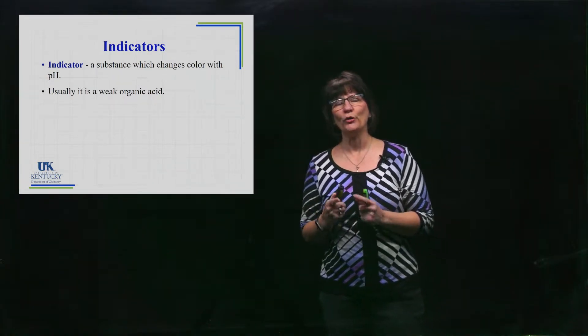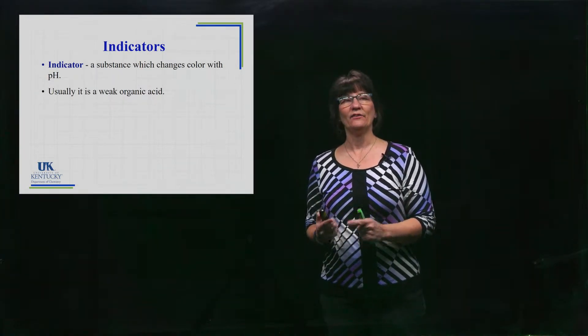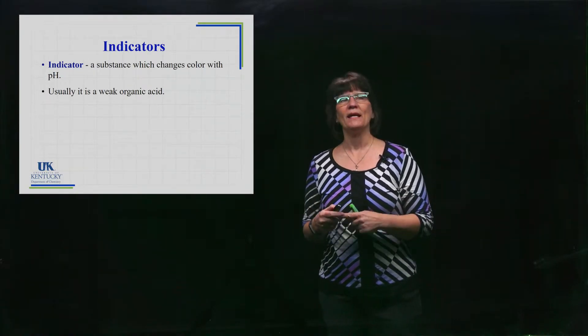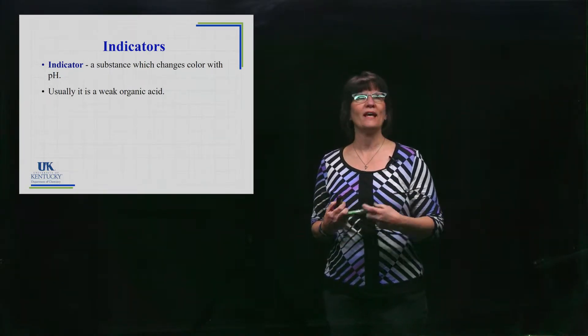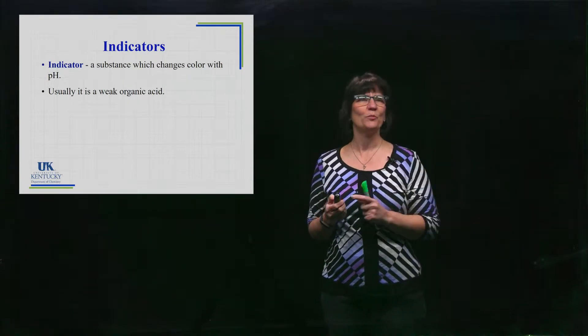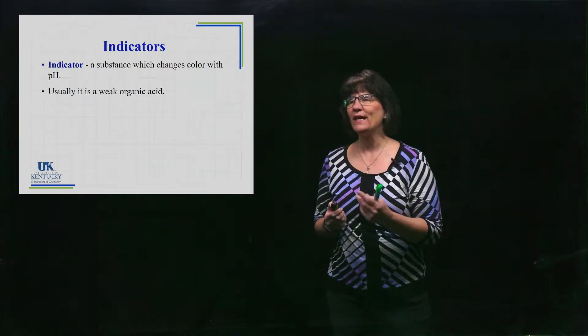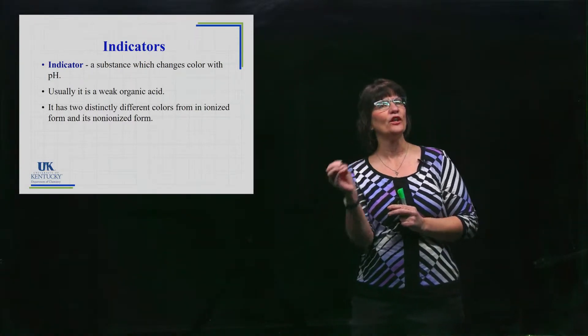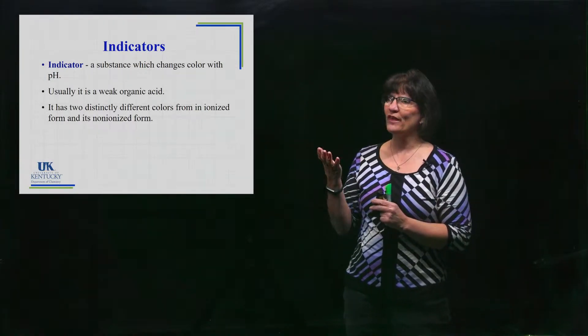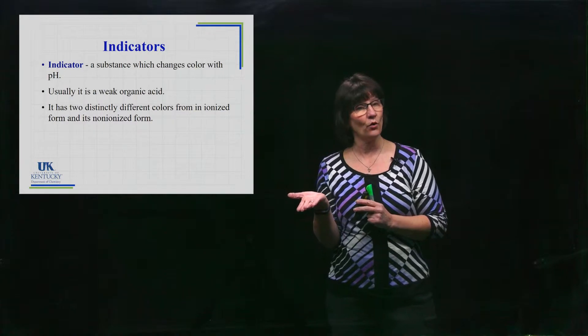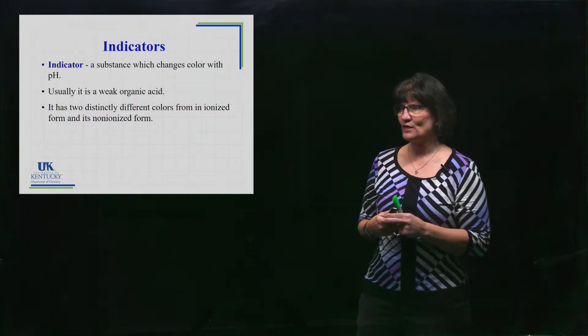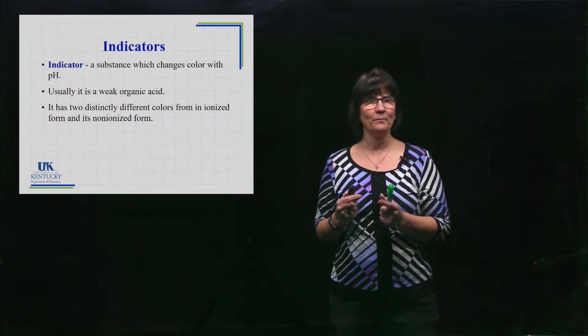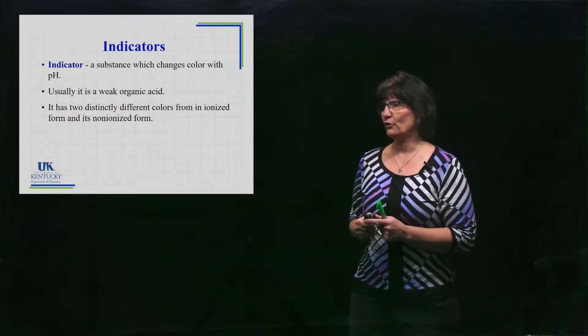So how does it work? Well usually it is itself a weak organic acid, meaning it has those carbons. It probably has a COOH group in there somewhere. They are weak acids, and these weak acids are very specific in that they're different colors depending on whether the H is attached in its acid form or it has been removed in its conjugate base form. So we say that it's ionized or non-ionized form. It would be two different colors.